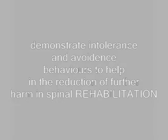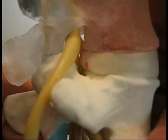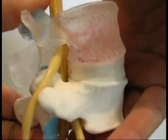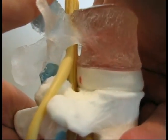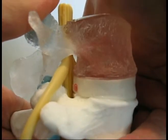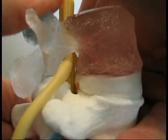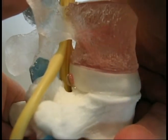Importantly, getting patients to understand intolerances will be helpful for rehabilitation purposes. With this more realistic spinal disc model, demonstrate how neutral loading does not cause as much posterior migration of the nucleus, but under flexion loading, migration occurs.